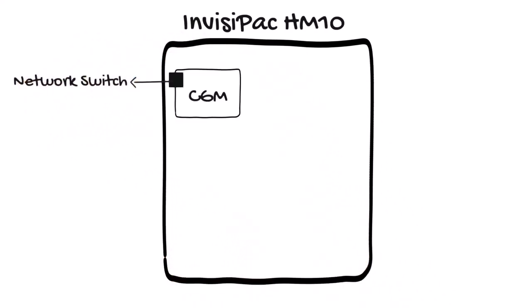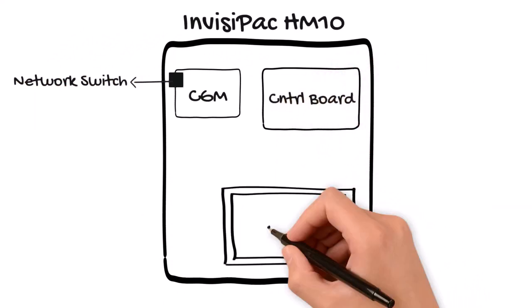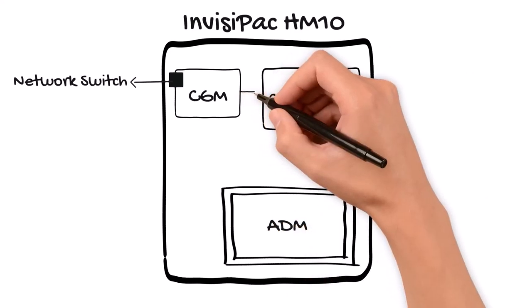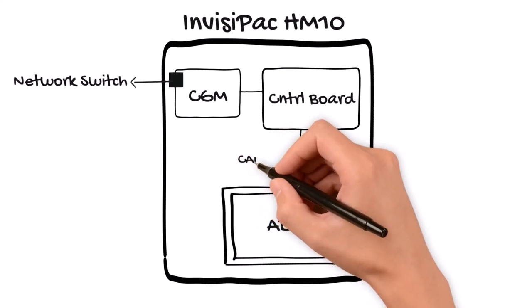It also contains a control board and an advanced display module or ADM, which is Graco's version of an HMI or human machine interface. All of these components within the HM10 communicate with one another over a CAN bus cable.